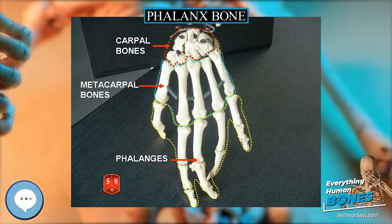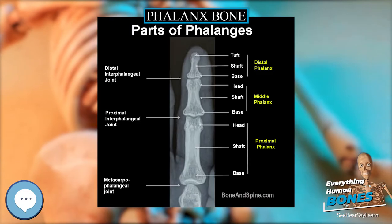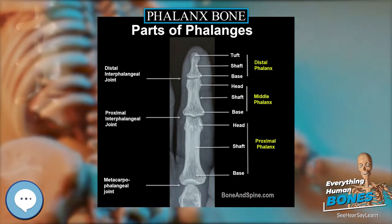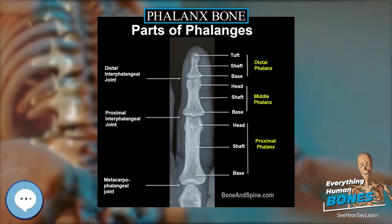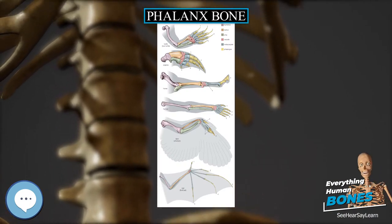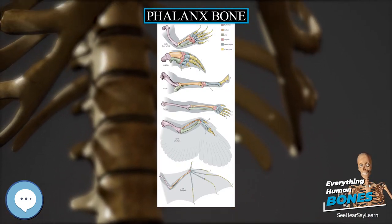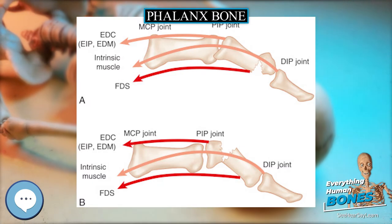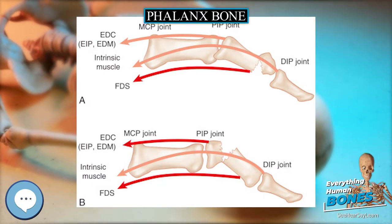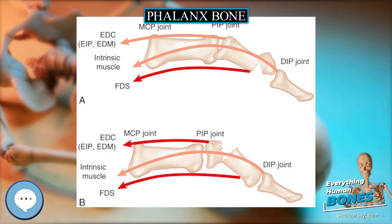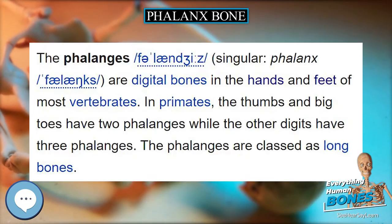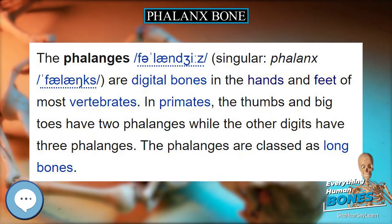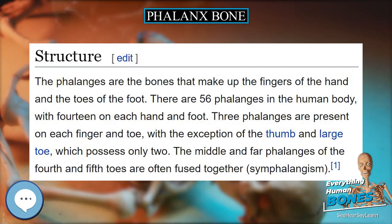The middle and far phalanges of the fourth and fifth toes are often fused together. The phalanges of the hand are commonly known as the finger bones. The phalanges of the foot differ from the hand in that they are often shorter and more compressed, especially in the proximal phalanges — those closest to the torso. A phalanx is named according to whether it is proximal, middle, or distal in its associated finger or toe.